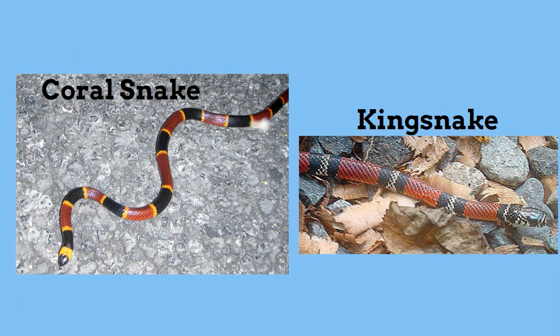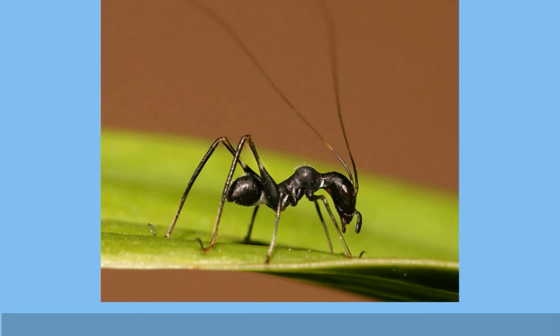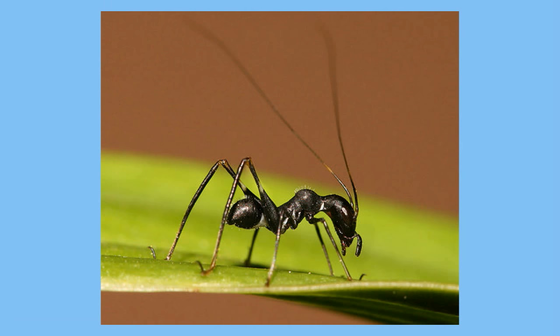This next example in mimicry looks like an ant, but it is in fact a cricket in its early larva stages. It is a microxifus cricket and resembles an ant in order to help it stay alive.